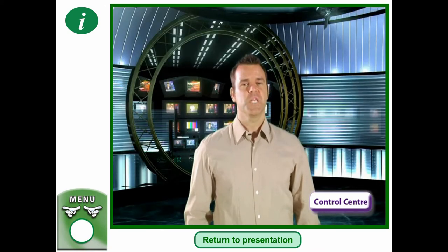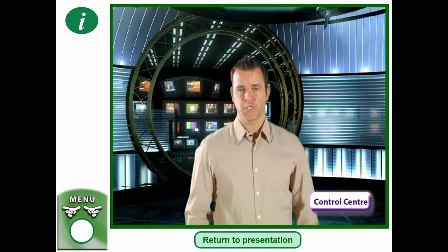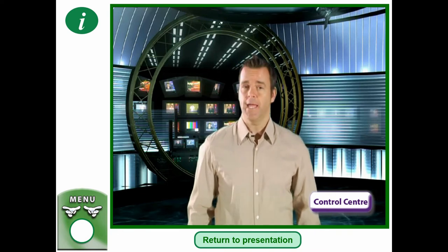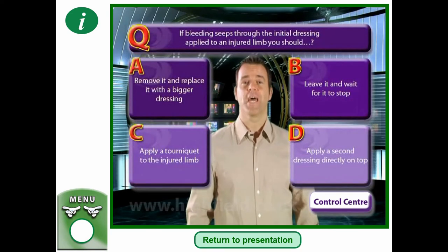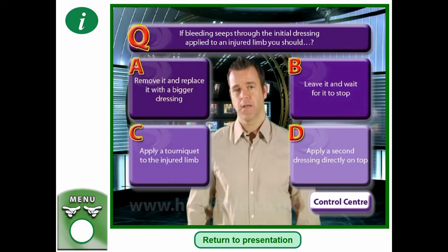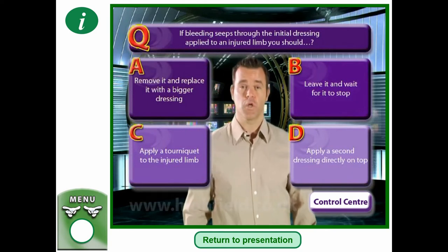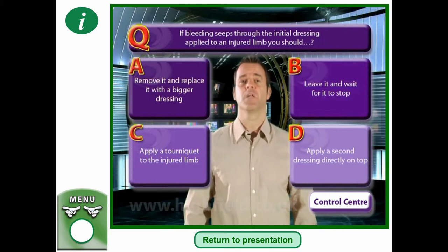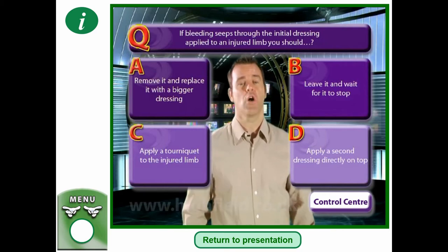If bleeding seeps through the initial dressing applied to an injured limb, you should: a) remove it and replace it with a bigger dressing, b) leave it and wait for it to stop, c) apply a tourniquet to the injured limb, or d) apply a second dressing directly on top.